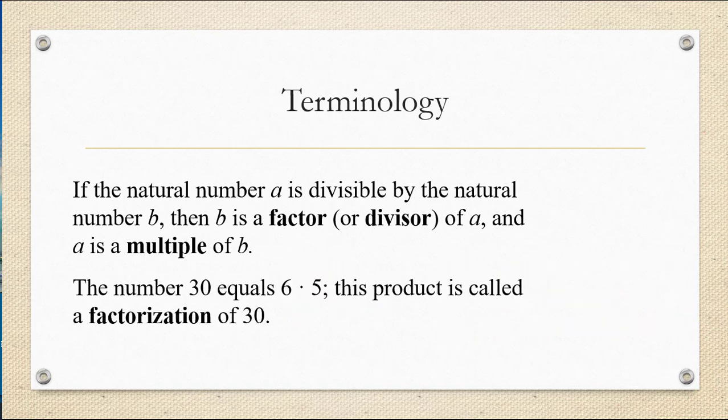The number 30 equals 6 times 5. This product is called a factorization of 30 because 30 is equal to the product of its two factors. 6 is a factor and 5 is a factor. And anytime you write a number as a product, we call that a factorization.